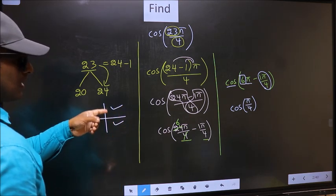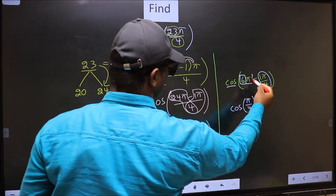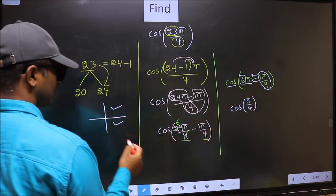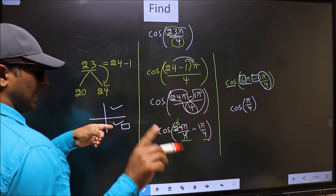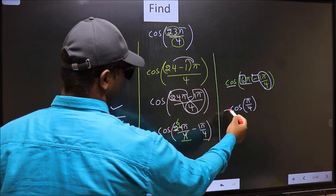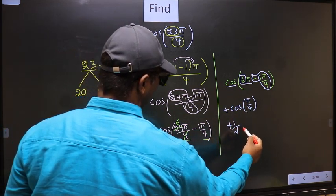To check which quadrant, we should look at this symbol. Here we have negative, meaning the angle lies in the fourth quadrant. In the fourth quadrant, cos is positive. So we put plus. Plus cos π by 4 is 1 by root 2. This is our answer.